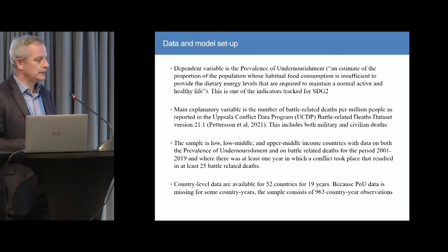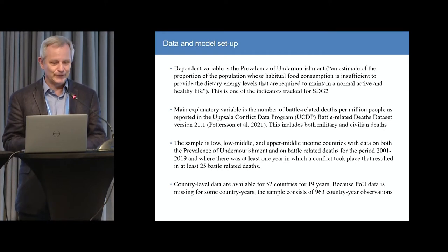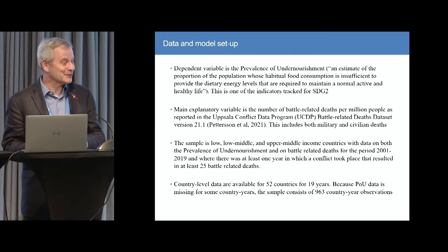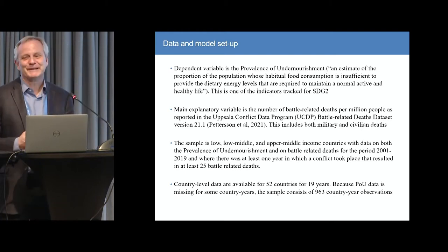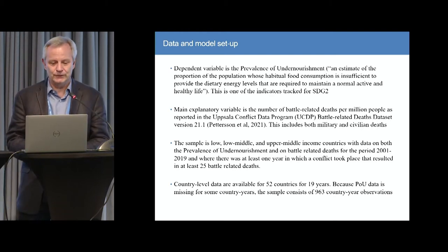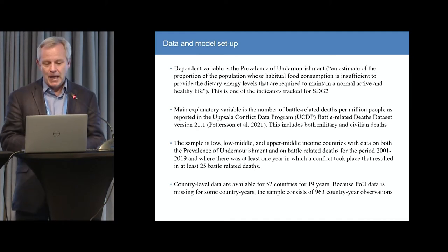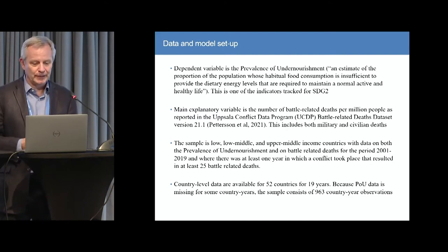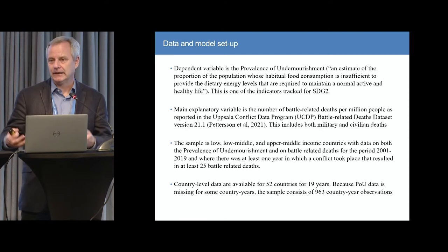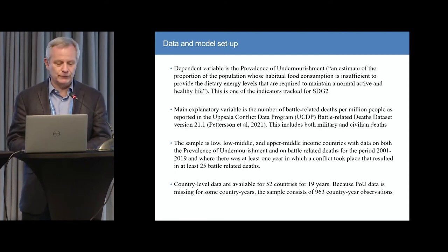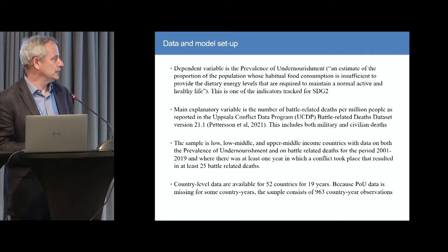The dependent variable I use is something called the prevalence of undernourishment. For those of you associated with the UN, Sustainable Development Goal 2 relates to the prevalence of hunger and undernourishment. This measure — an estimate of the proportion of the population whose habitual food consumption is insufficient to provide dietary energy levels that meet individual requirements — is the outcome measure I'm going to use in the study.